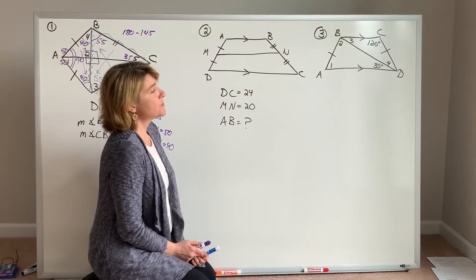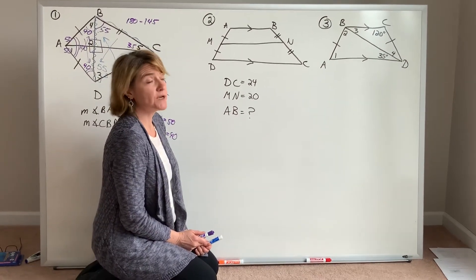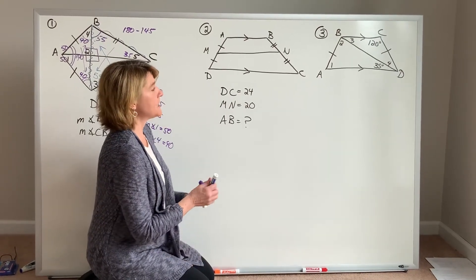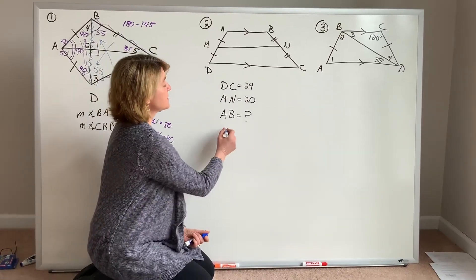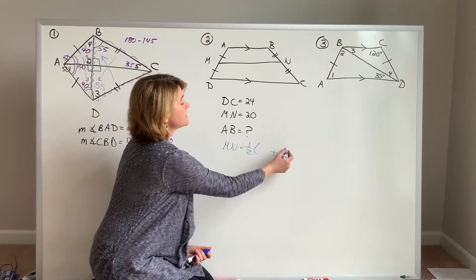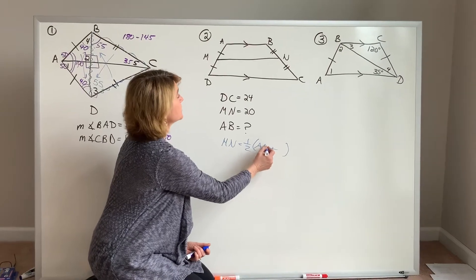In example two, we're told that points M and N are midpoints of the legs, and because they are, that makes MN a median. Our theorem tells us that the length of the median of a trapezoid is equal to one-half the sum of the lengths of the two bases.